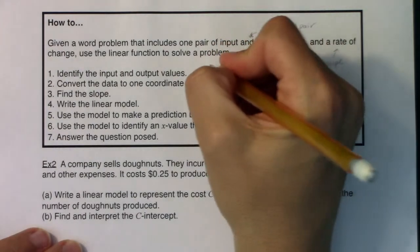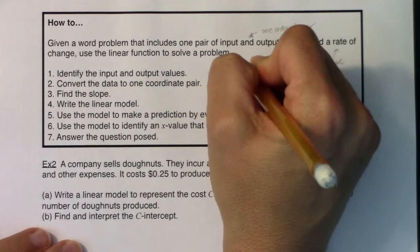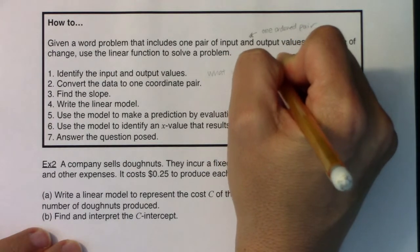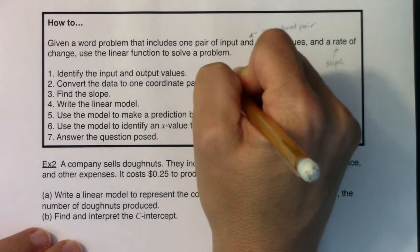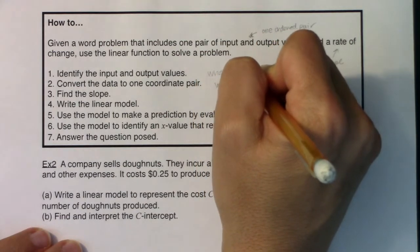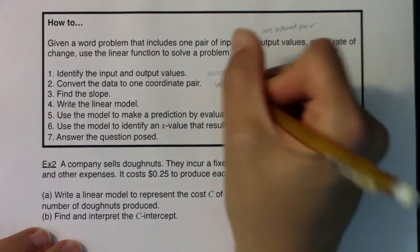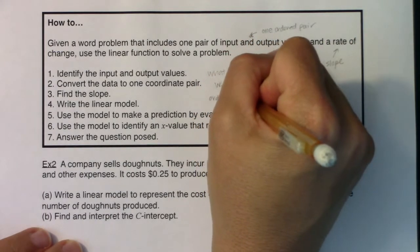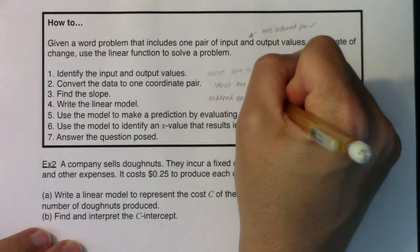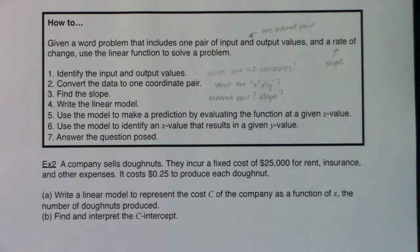So as I read through this, great questions to ask yourselves: What are the variables? What are my x and y? If they're even calling them x and y. Was I given an ordered pair? Was I given a slope? Was I given one of each? Was I given two ordered pairs? Those are always great questions to ask yourself.